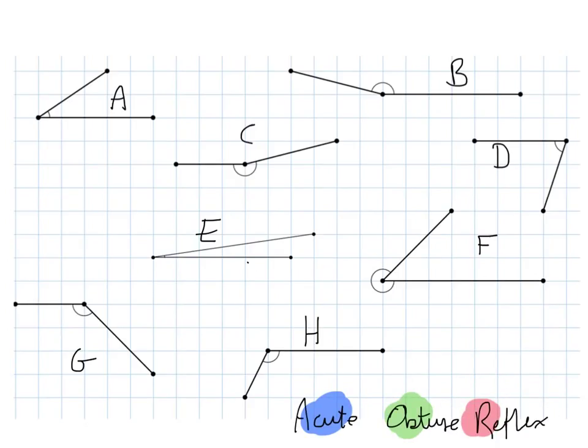So we'll go through the different types of angles that are on here. A, D, and E are your acute angles. They're all smaller than 90 degrees. They're all smaller than a right angle.